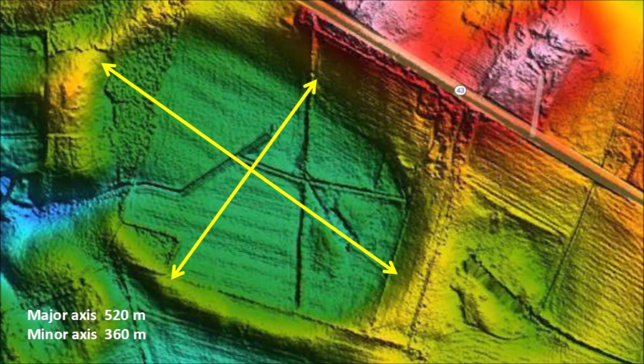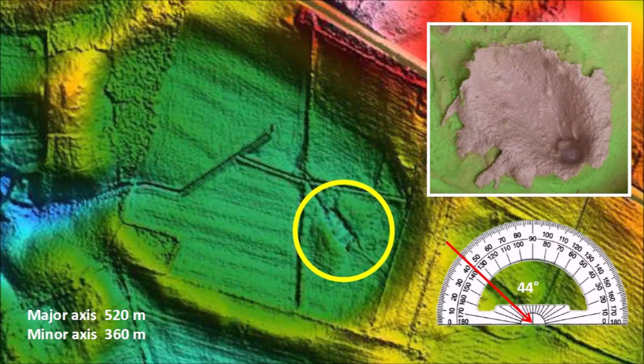Bittner Bay has a major axis of 520 meters and a minor axis of 360 meters. From its width to length ratio, we can estimate that the bay was made by an oblique impact at about 44 degrees.